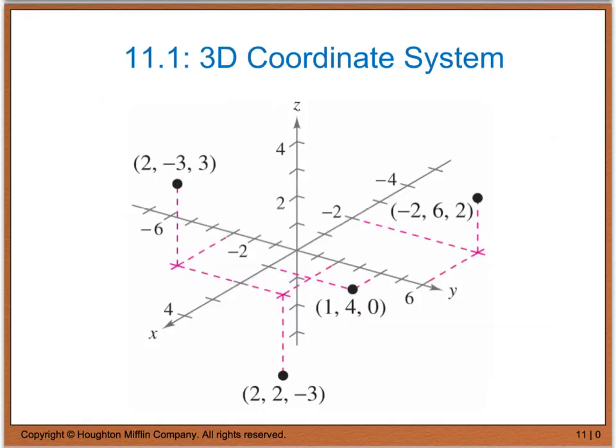This here is just an example of how you would plot your 3D coordinate points. If you notice, this here is our positive x direction. This is negative x. This is our positive y, negative y. We have positive z and our negative z direction. So when we look at this point right here, negative two means I'm going to go back two in the x direction, over six in the y direction, and then up two in the z direction.